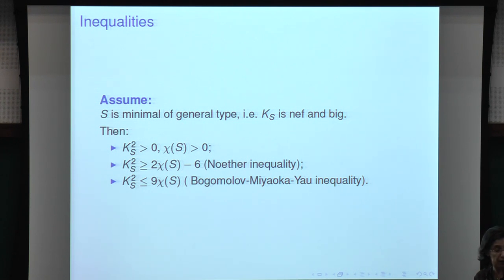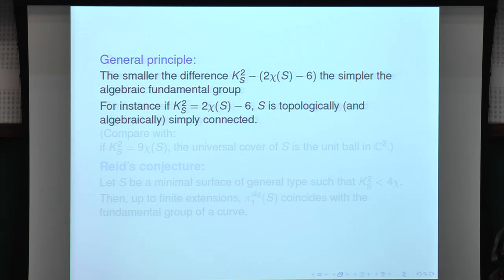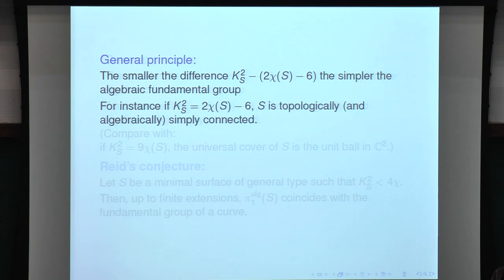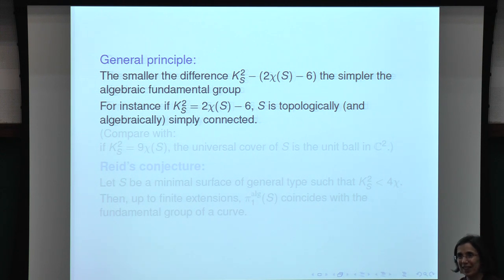What I want to discuss is the fundamental group of surfaces not far from the bottom, where K² < 4χ. The general principle is that the smaller the difference K² - (2χ - 6), the simpler the algebraic fundamental group. This is a general principle for all surfaces, since you can find simply connected surfaces almost up to K² = 9χ, as Giancarlo Urzua may explain.